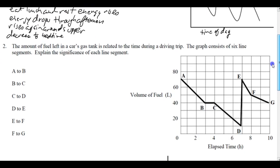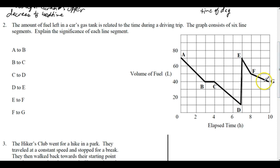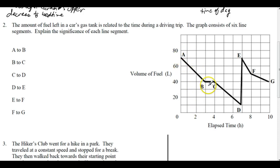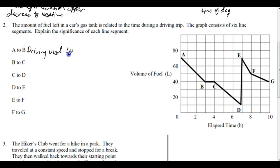Here's something where we can put some numbers to this. The amount of fuel left in a car's gas tank is related to the time during a driving trip. The graph consists of six line segments — explain the significance of each. First, figure out the scale: it looks like tens on the fuel axis, and time is in hours in ones. From A to B, we start with 70 liters, and in three hours we've dropped to 40 liters. So driving used 30 liters in a total of three hours.